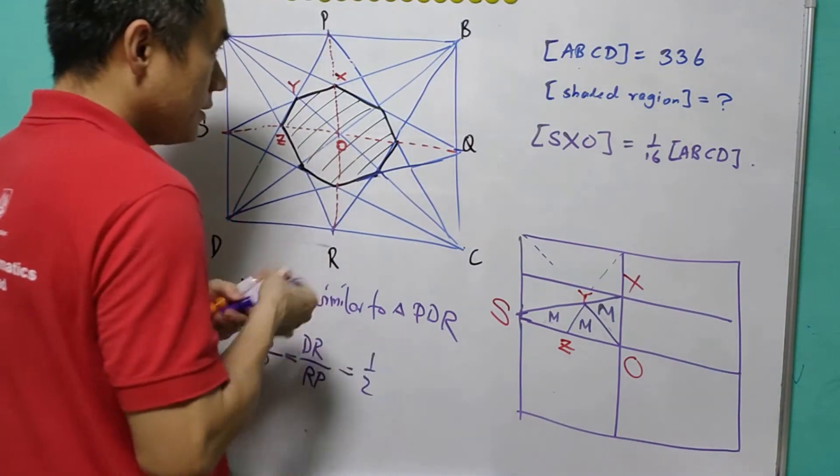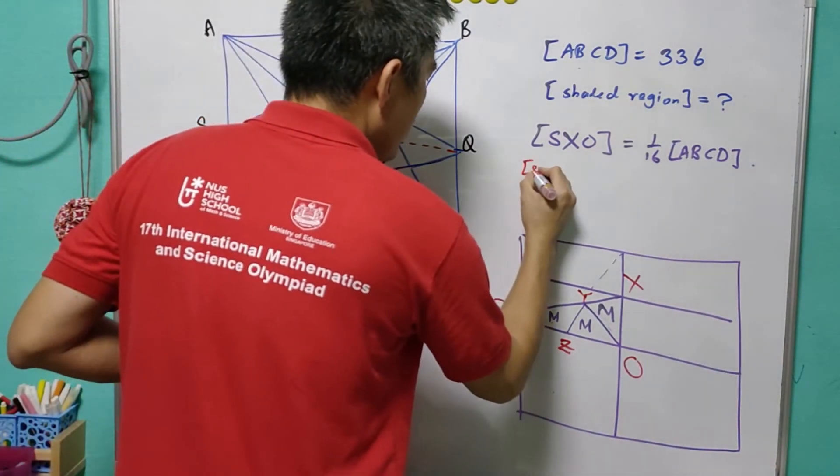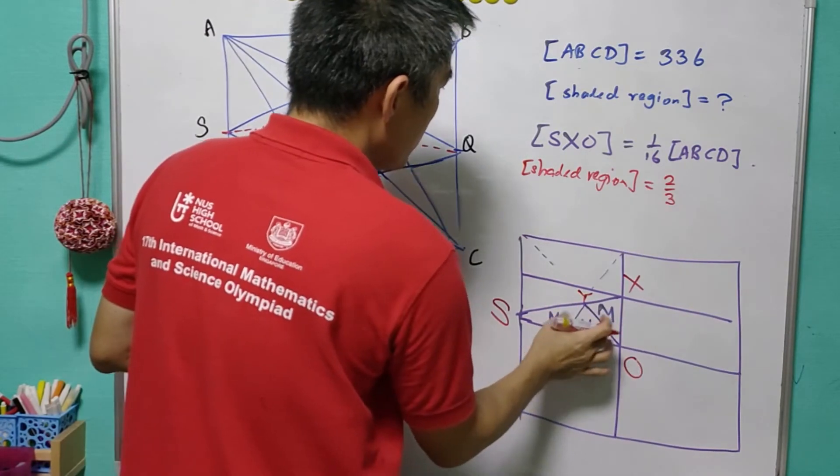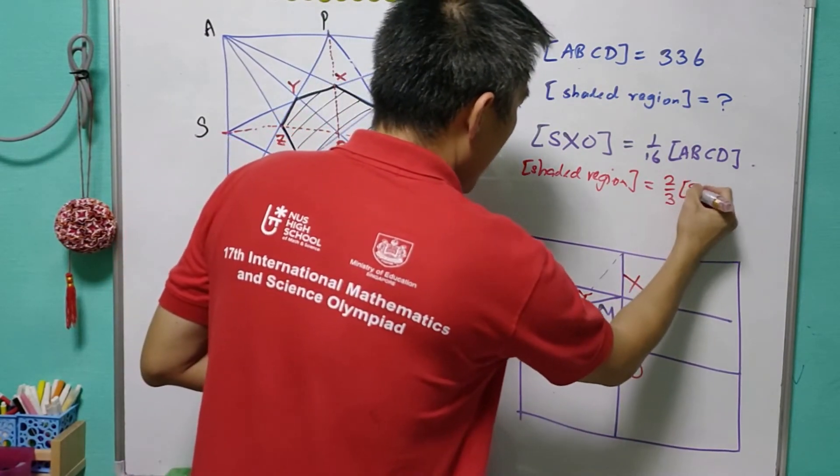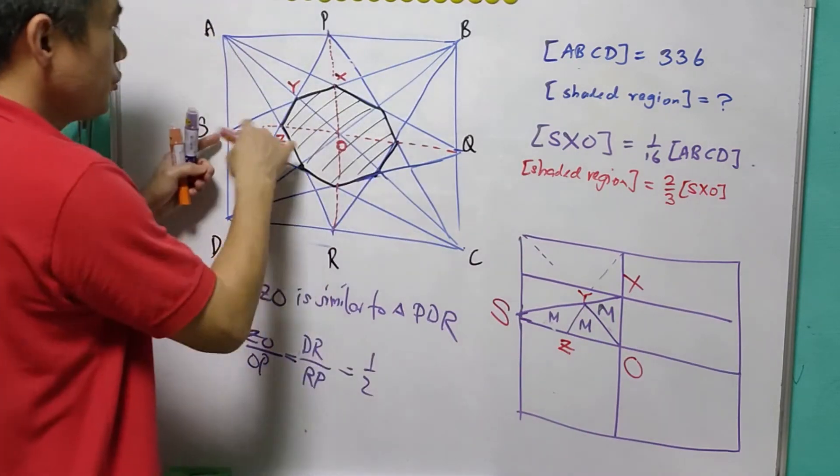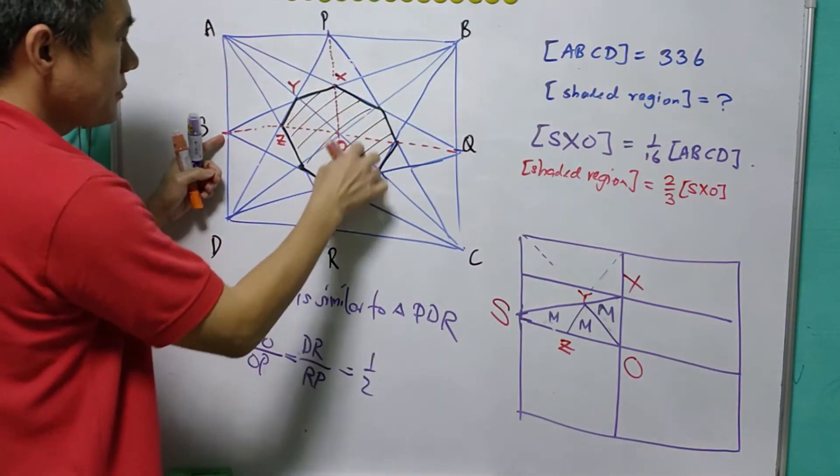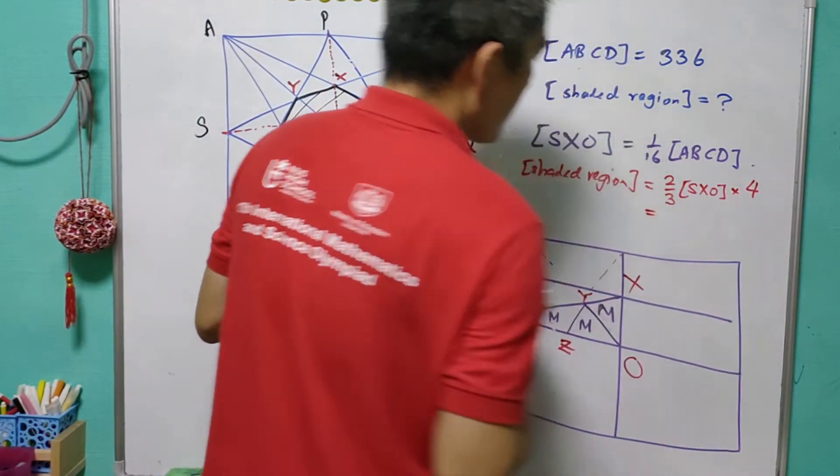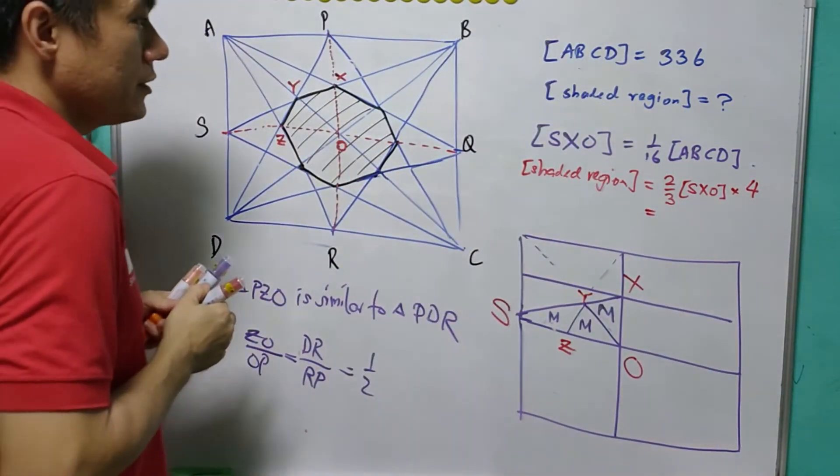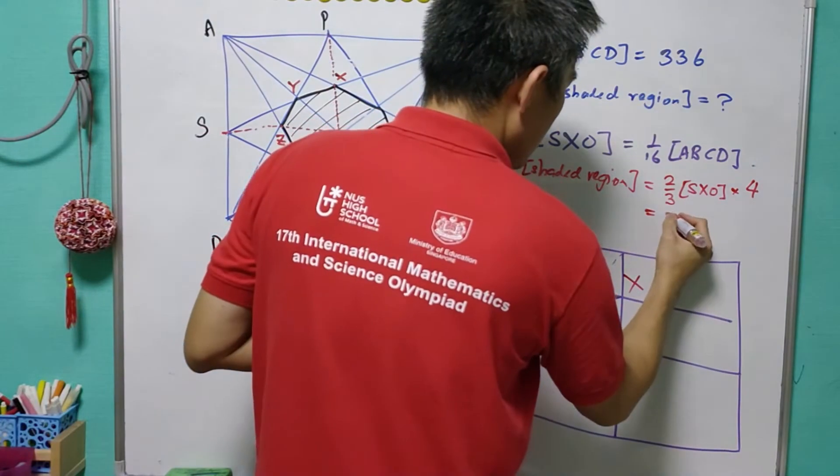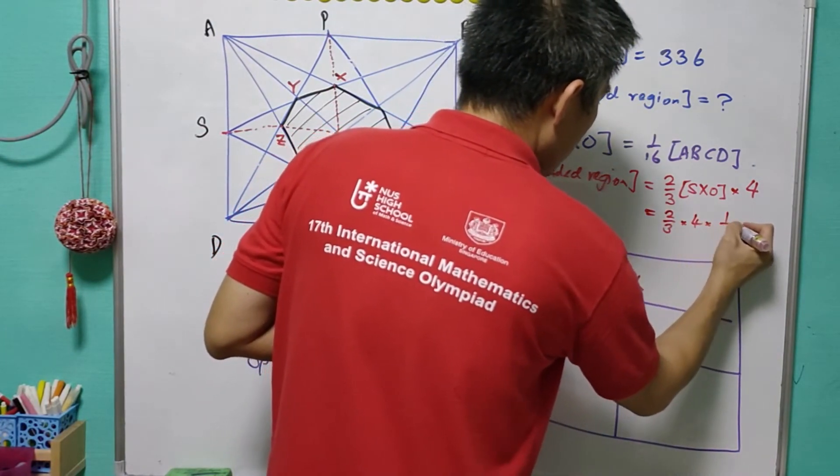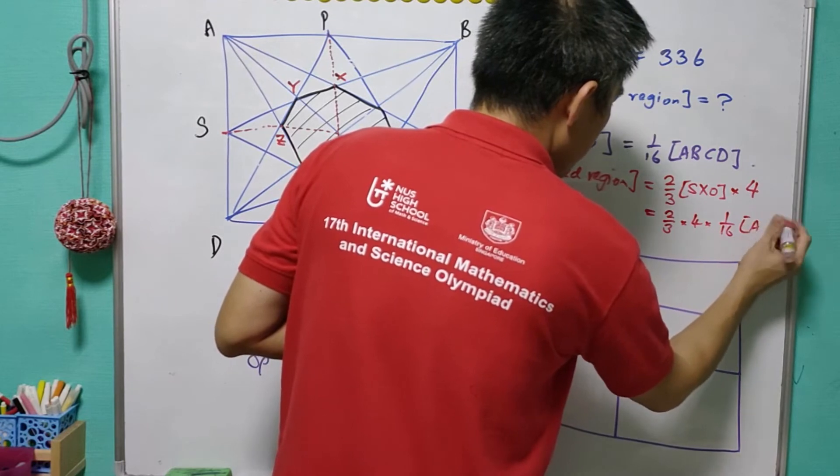Now, this is easy to calculate that the area of shaded region is 2 over 3 of SXO, 2 over 3 of XO times 4. And therefore, it is equal to 2 over 3 times 4 times 1 over 16 ABCD.